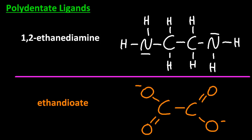For the one below, ethandioate, that one also has availability of two places where it can form a dative covalent bond. I'm going to tidy up the structure from the IB data booklet and show the resonance structure — maybe they'll ask about that, maybe they won't.